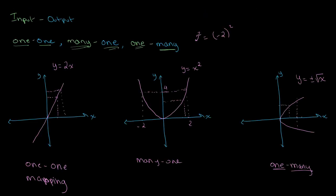For one-one mapping, we see that for each input value we receive only one output value, and therefore one-one mapping can be used to describe functions. When we look at many-one mapping, we also see that for each input value we receive only one output value, so many-one mapping can also be used to describe functions. However, for one-many mapping, each one input value produces two output values, which is not consistent with our definition of functions — therefore one-many mapping cannot be used to describe functions.